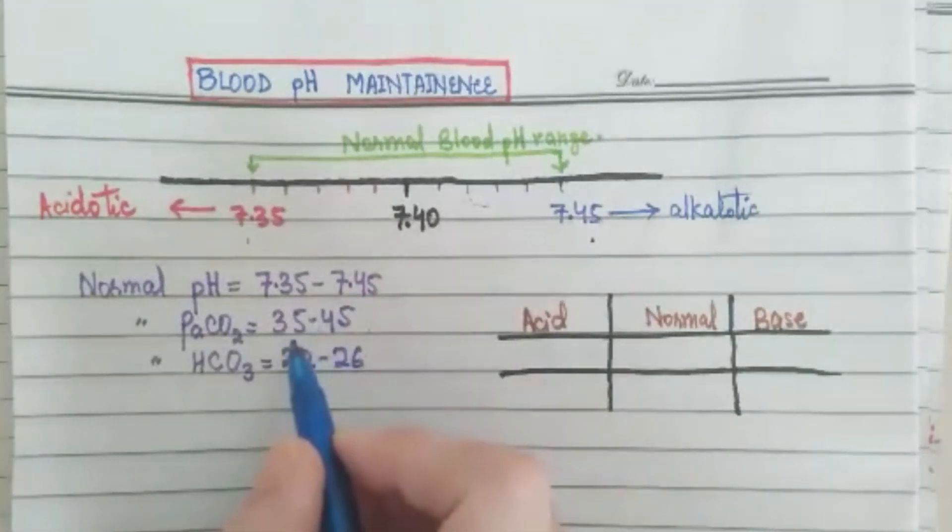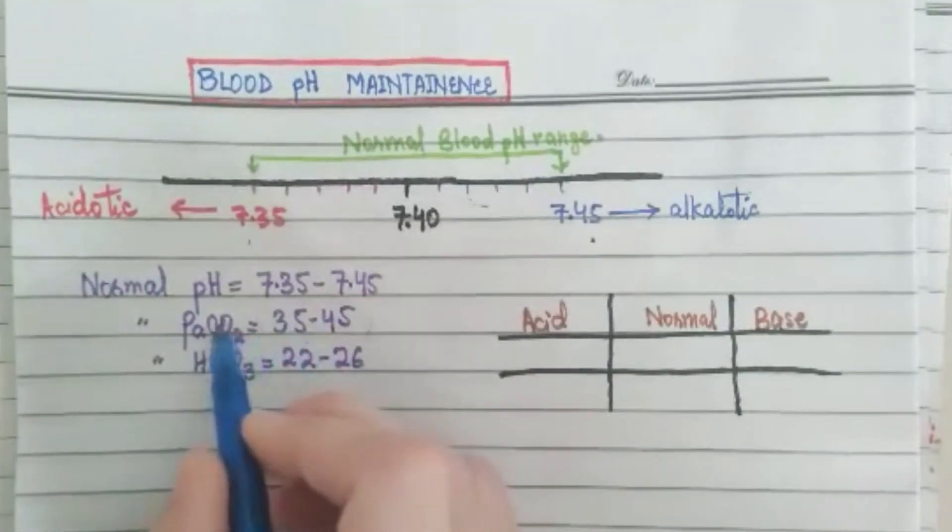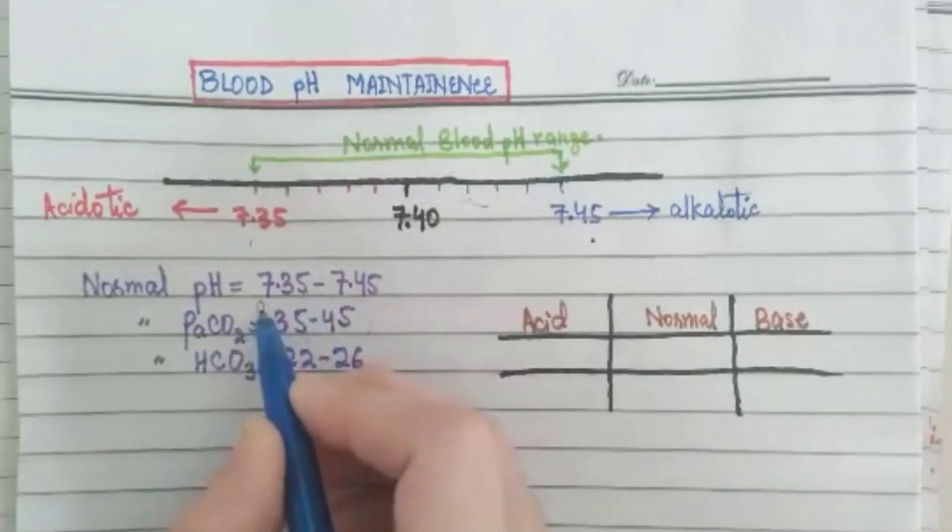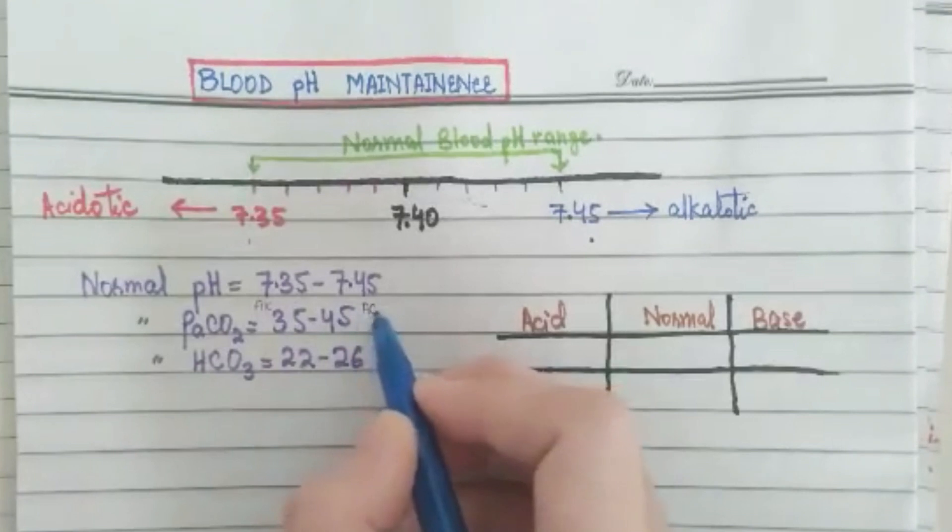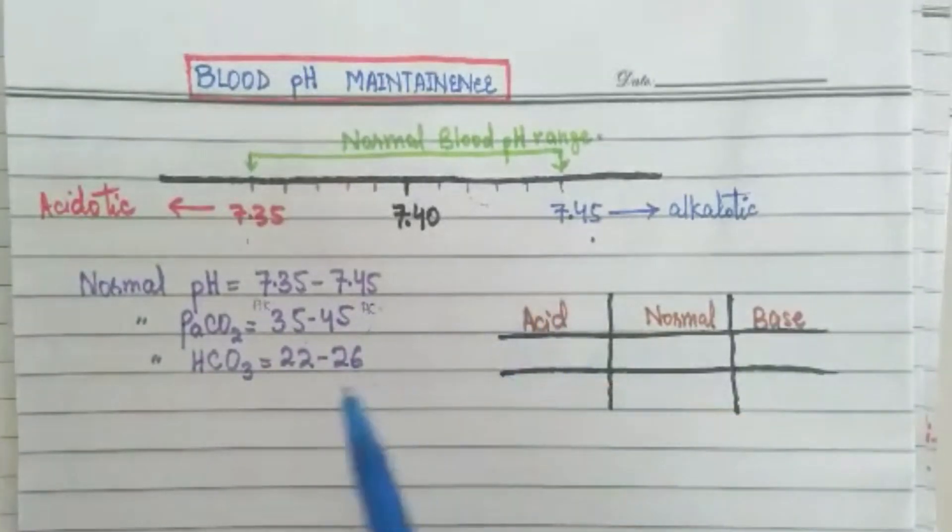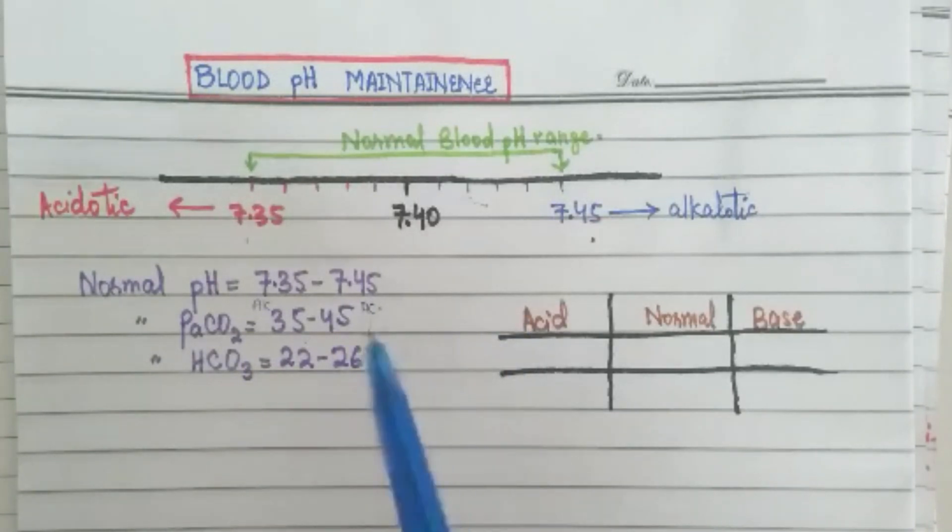If PCO2 is high, if it is less than normal it is the alkalotic side. And if it goes above 45, it's the acid side. Same with the partial pressure. Because the partial pressure will increase, it will create carbon dioxide, so it will create an acidic environment. If it goes above 45 then it will be acidotic. And if it is less than 35 then it will be on the base side.